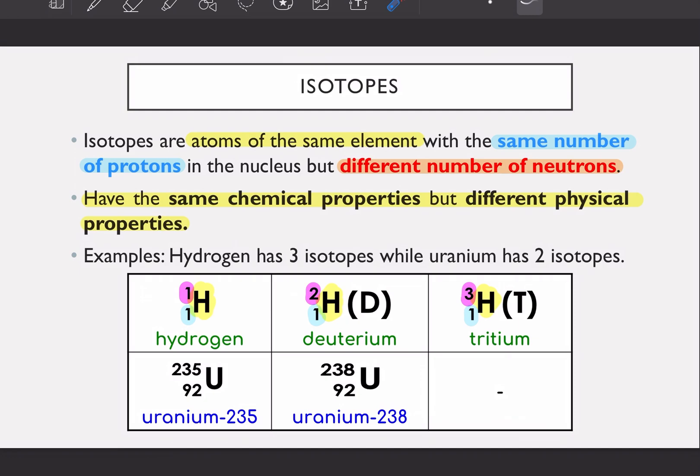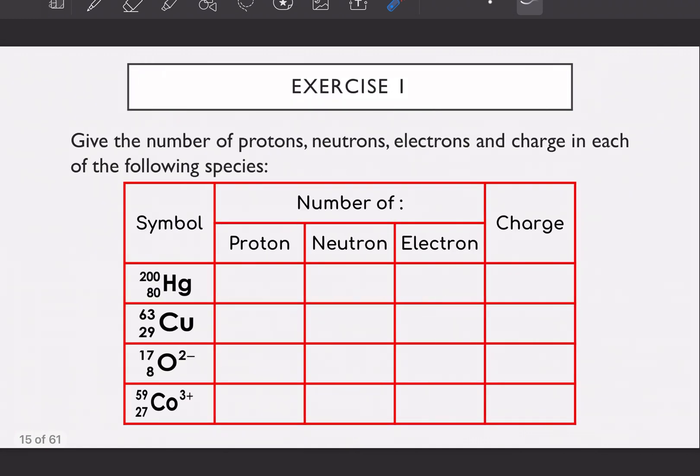Karakteristik of your isotope is that they have same chemical properties. That means that hydrogen, deuterium and tritium they have same chemical properties. That means it reacts to a certain reaction similarly. Cara dia react dengan let's say combustion sama. But different physical properties.